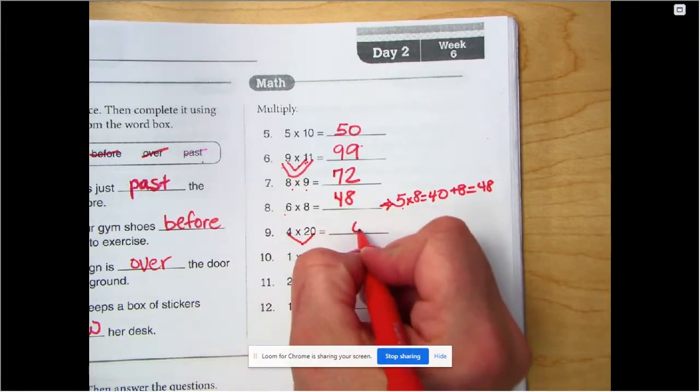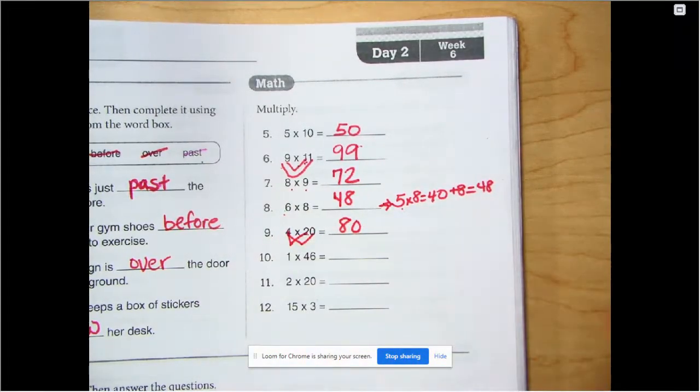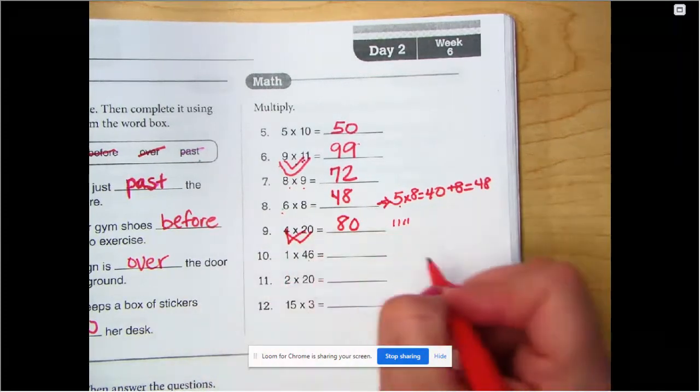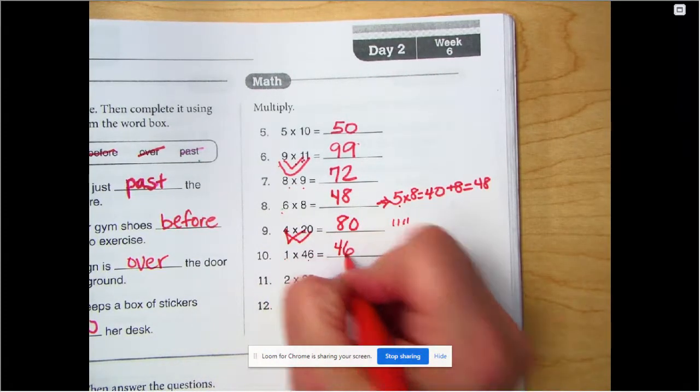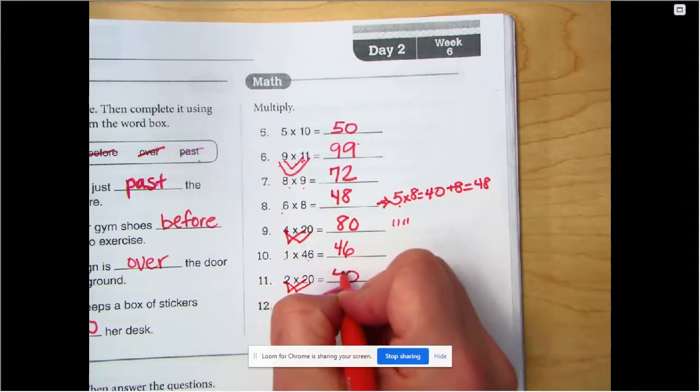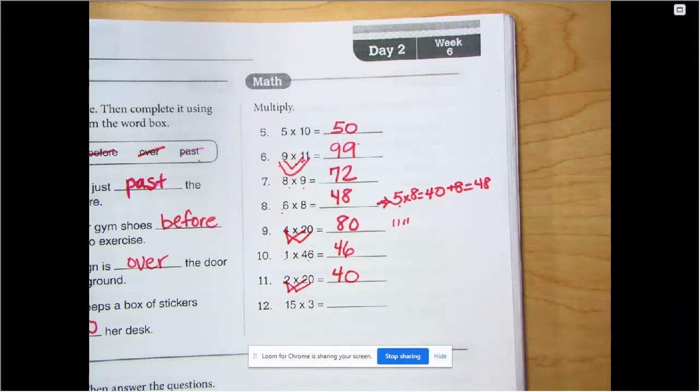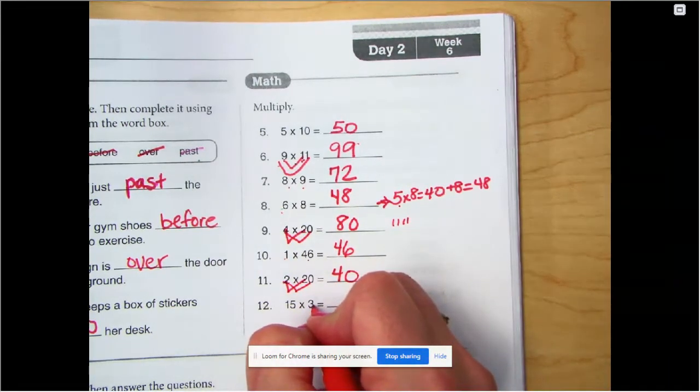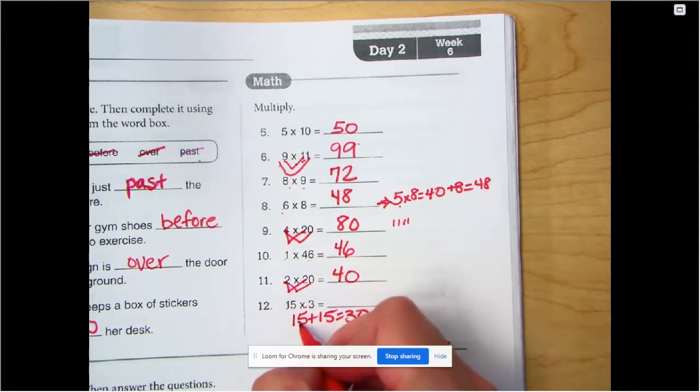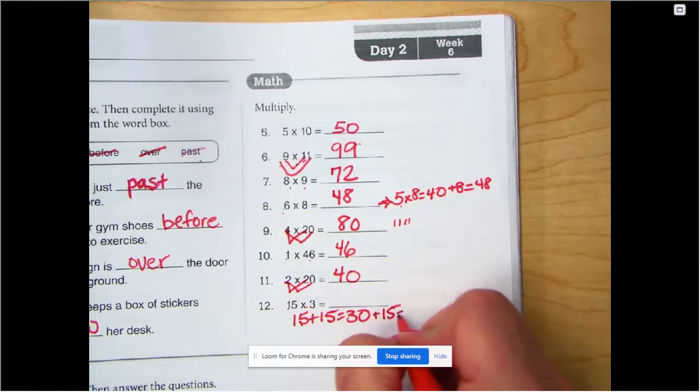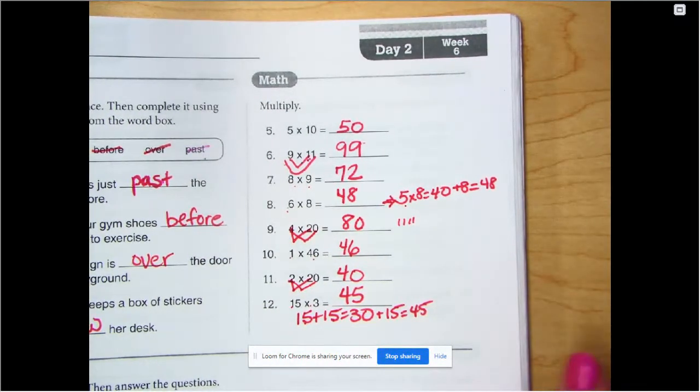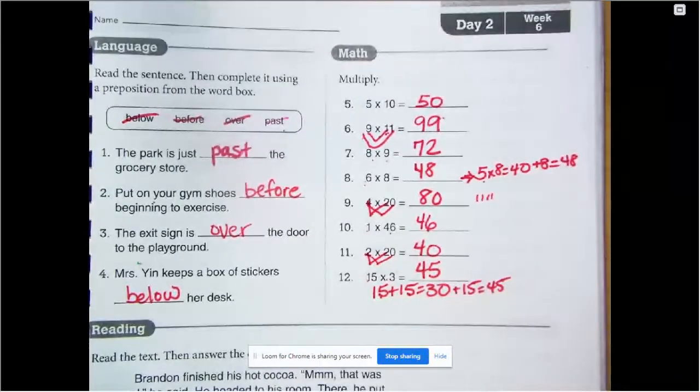Zero times 4 is 0. Two times 4 is 8. One way we can do 15 times 3, we can do 15 plus 15 equals 30. That's one, two. We need one more. Plus 15 is 45. All right. If you have any mistakes, go ahead and fix them. And if you need a minute, go ahead and push pause right now so you can finish that up.